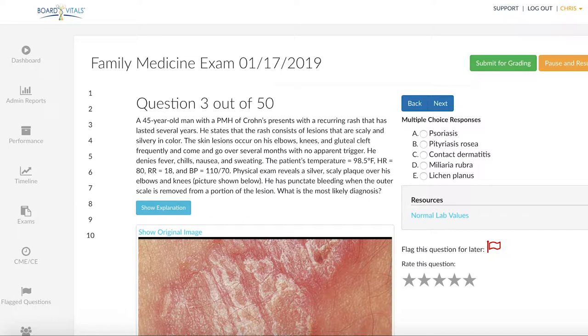No fever, chills, nausea, no other symptoms on review of systems. His temperature is normal, his vitals are within normal limits, but the exam does show this silvery scaly plaque over his elbows and knees.